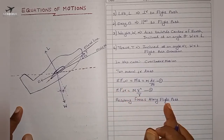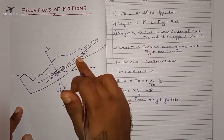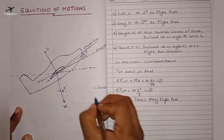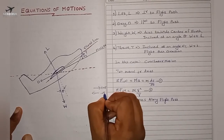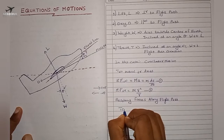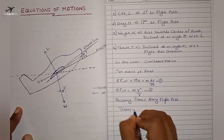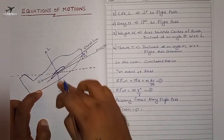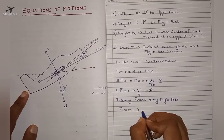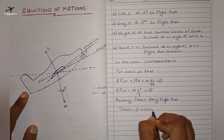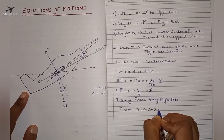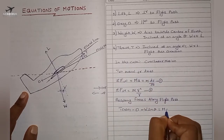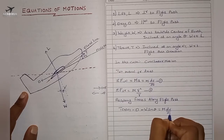Resolving forces along the flight path, taking the right side as positive and the left side as negative, we get: T cos(αt) minus drag D minus W sin(θ) acting toward the left-hand side, and this equals m times dv/dt. This is equation number three.